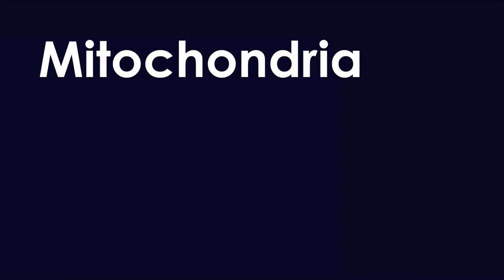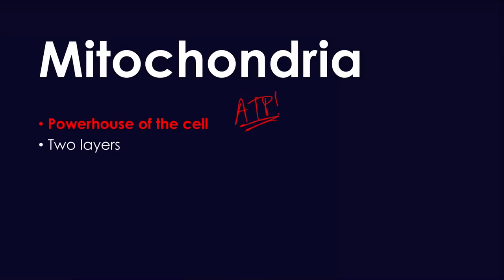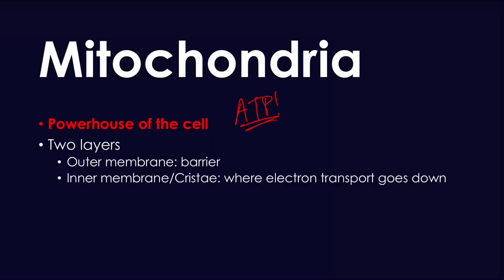Next, let's go on to the mitochondria. You've heard this phrase a lot: mitochondria is the powerhouse of the cell, and it is because it plays a very huge role in producing ATP. It has two layers — an outer membrane, which acts as a barrier, and an inner membrane along with some folds called the cristae, where the electron transport chain operates. The electron transport chain produces ATP, and it's all happening in the inner membrane.